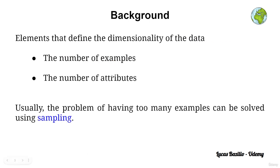There are two elements that define the dimensionality of the dataset. One, the number of examples, the number of rows that we have on the dataset. And two, the number of attributes, that is, how many columns, how many features we have in this dataset.